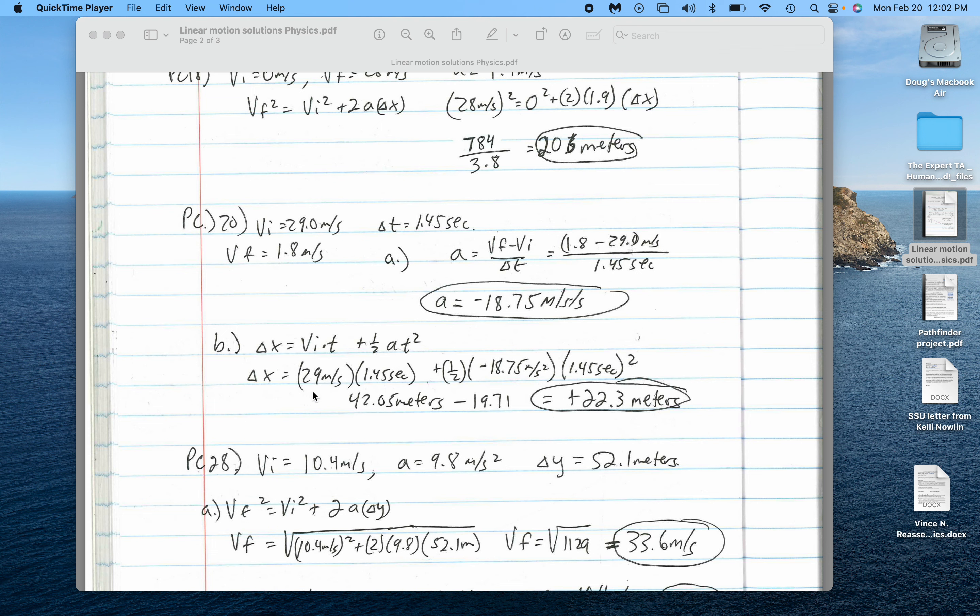This part basically tells us how far we go if there was no acceleration and a constant speed. This part tells us how much we go due to the acceleration, and since that's negative, this is a negative number.